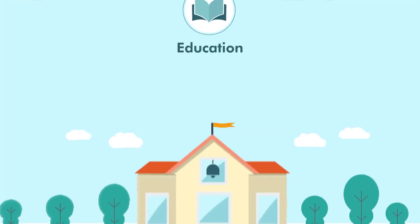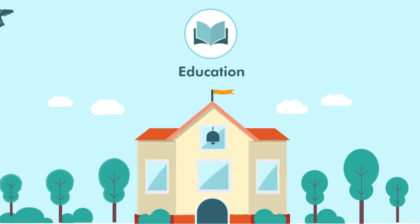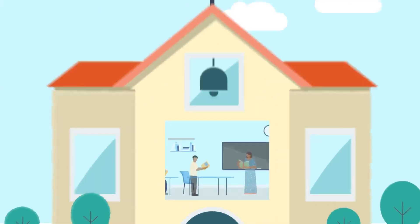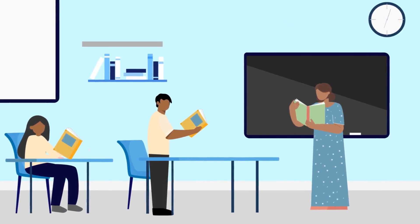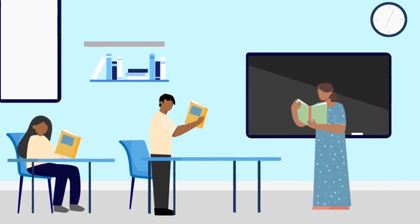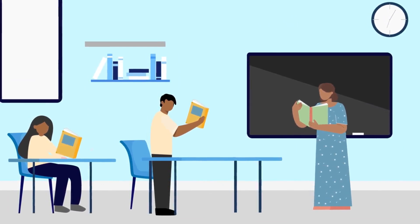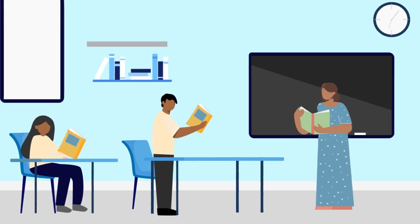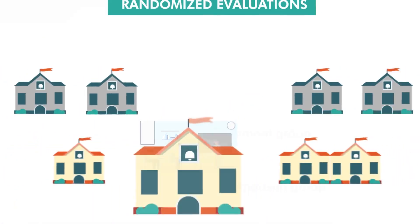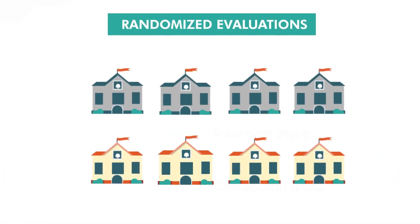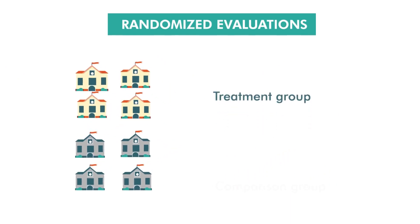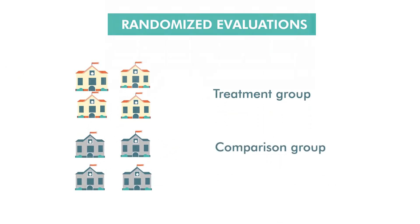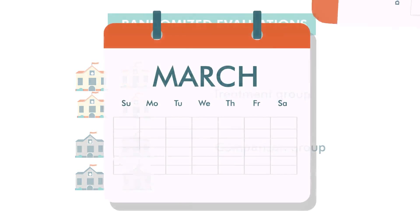Take education as an example. In many schools, children are falling behind. A randomized evaluation can help tell us whether a program designed to help children's reading skills is effective. Some schools are randomly assigned to participate in the reading program, and others are randomly assigned to continue under the status quo in the comparison group.